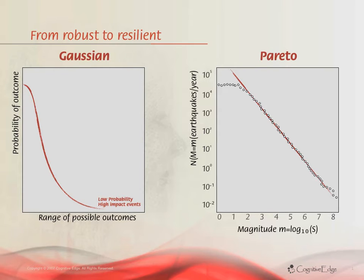Effectively anything where I do a double log scale of size against frequency produces these power laws. And if I take some liberties with statistical representation and overlay a Pareto distribution on my Gaussian model, I get what's called a fat tail.